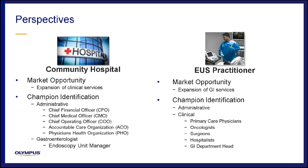There is a close parallel between your community hospital and EOS practitioner in terms of perspectives. Your community hospital seeks market opportunity for expansion of clinical services, while your EOS practitioner seeks to expand beyond general GI services. To get an EOS program up and running, your community hospital and EOS practitioner have to identify administrative and clinical champions. On the community hospital side, these include the CFO, CMO, COO, heads of the occupational care and physician health organizations, and the endoscopy unit manager. On the EOS practitioner side, clinical champions include primary care physicians, oncologists, surgeons, hospitalists, and the GI department head.